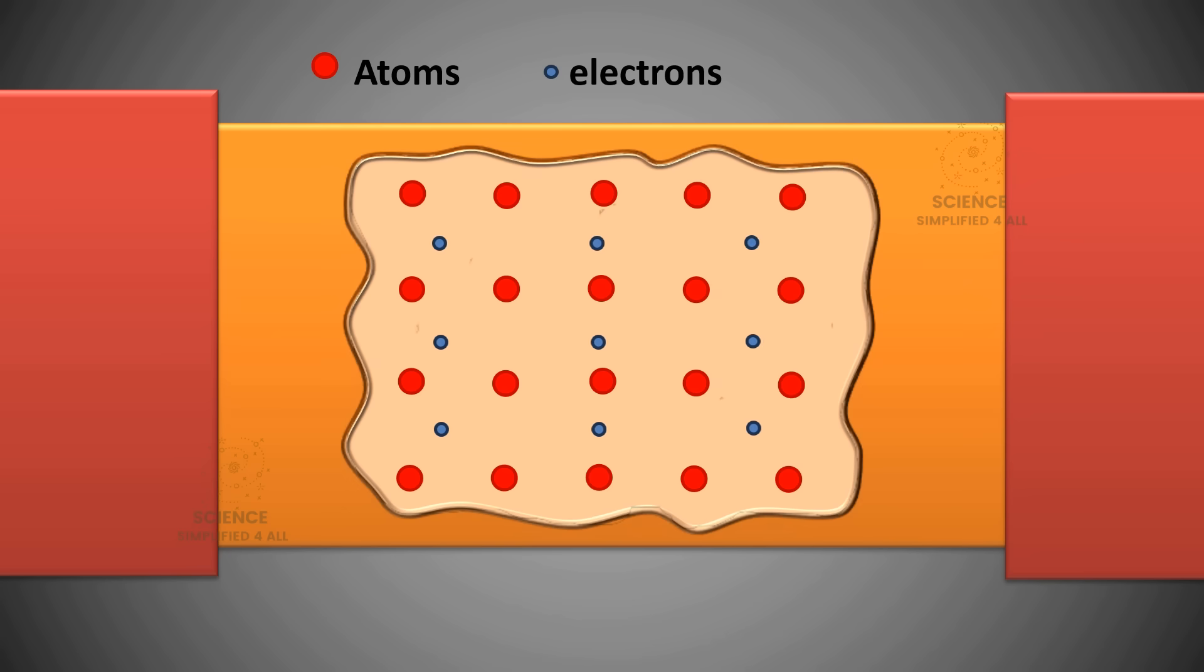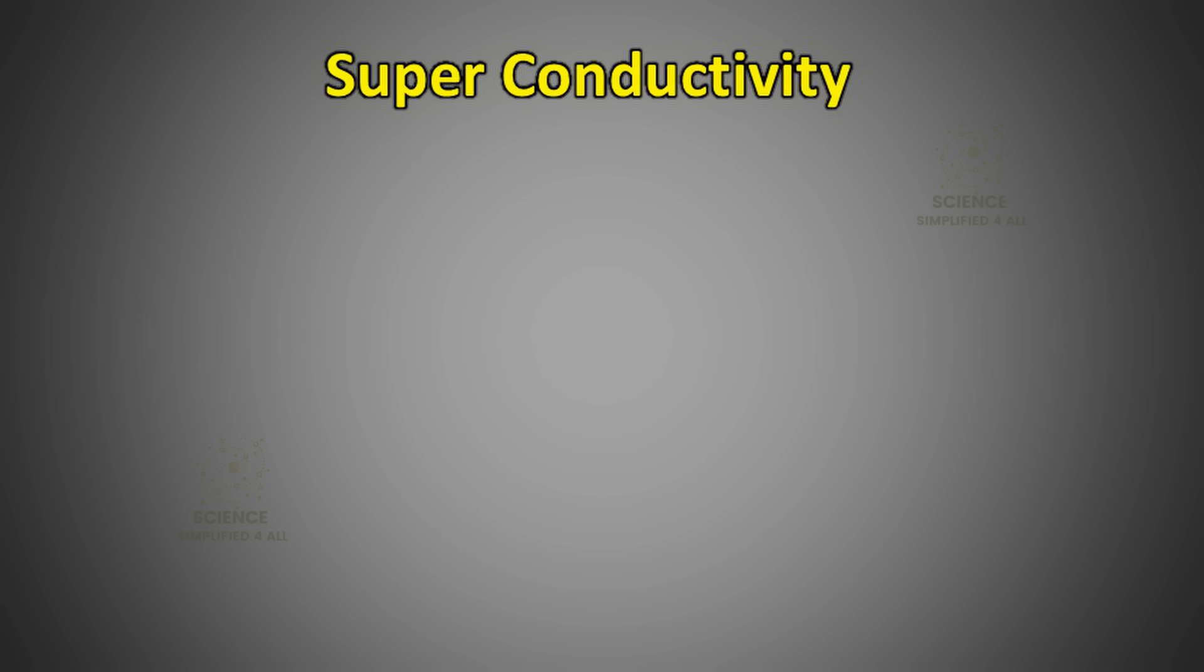When this kind of conductor is cooled further to extremely low temperatures, these Cooper pairs collectively enter a state similar to a Bose-Einstein condensate. In this state, all the Cooper pairs move in perfect coordination, flowing through the material without scattering off atoms or each other. Because of this, the resistance drops to zero, and the material becomes a superconductor. That is in brief what superconductivity means.